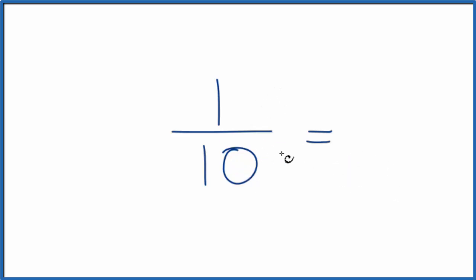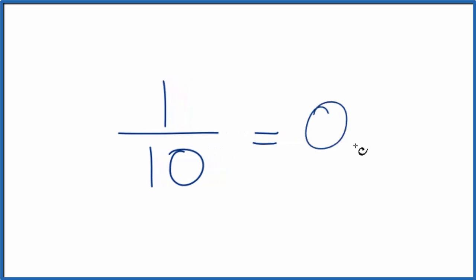So we know one is smaller than ten, so it's going to have to be zero point something. Our decimal will be zero point something. If we type this into a calculator, one divided by ten, that gives us zero point one.